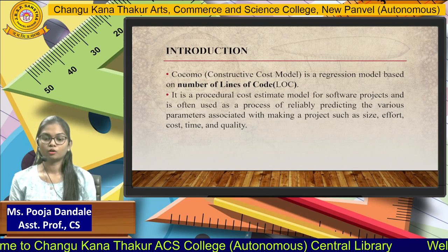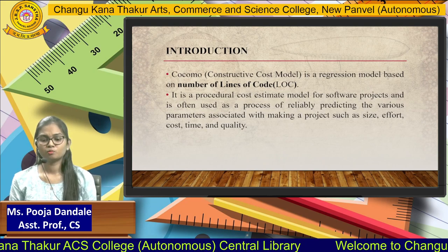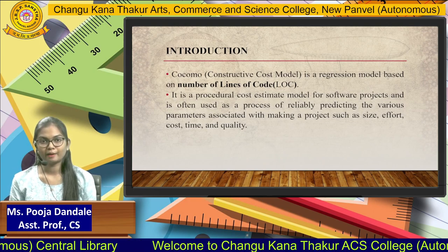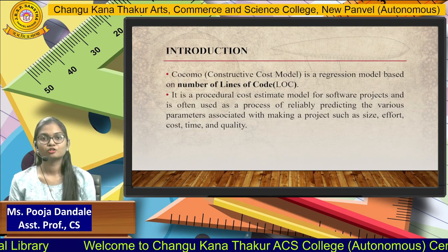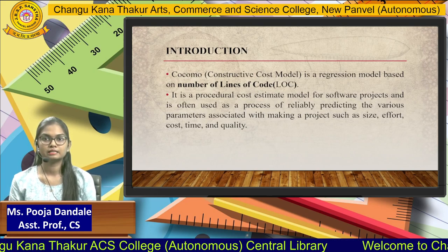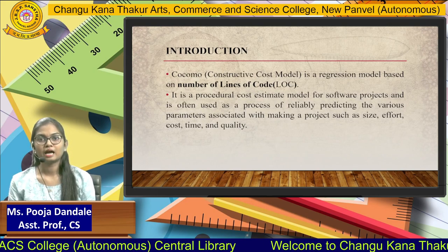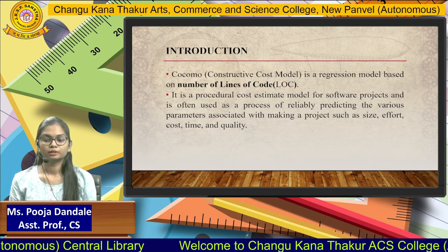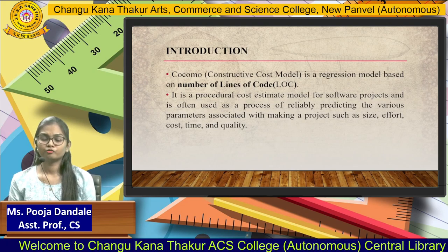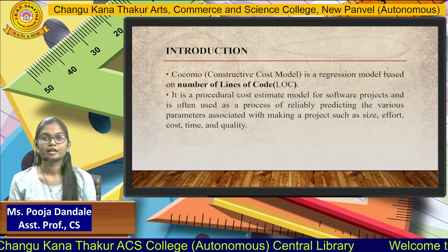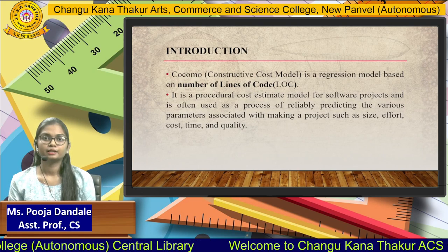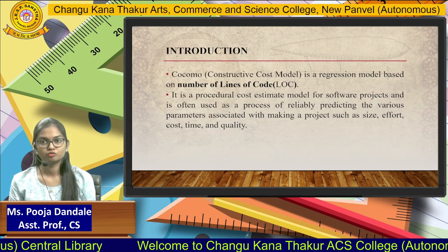The COCOMO model is a regression model based on the number of lines of code in our product. Suppose we are building an application — we look at how many lines of code are in that development. Cost estimation is done here for software projects, and it is used for reliably predicting various parameters associated with making the project, which includes the size, effort, cost, time, and quality of the product.